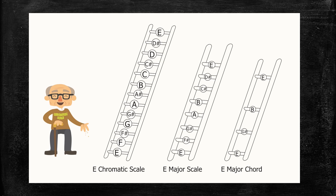The illustration shows: the E chromatic scale, the E major scale, the E major arpeggio, and the E major chord — each derived by omitting notes from the previous element.